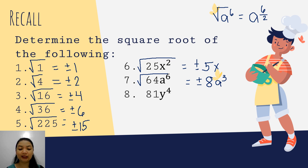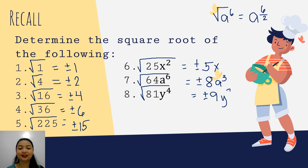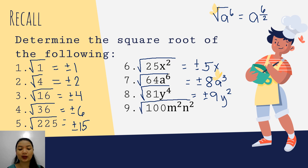How about 81y to the 4th? We get the square root, which is positive, negative 9y squared. How about 100m squared n squared? The square root of this is positive, negative 10mn.